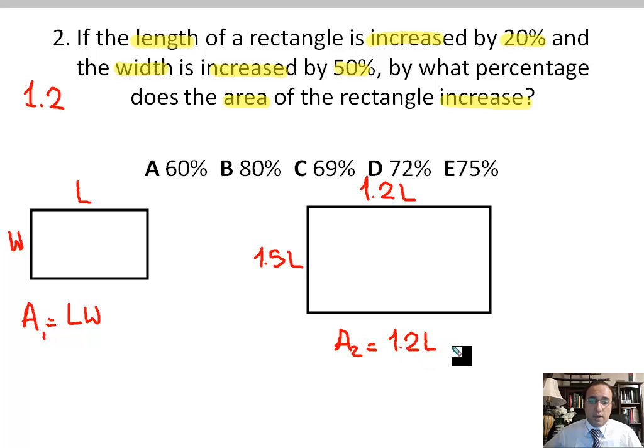which is 1.2L times 1.5W. Now, I need to rewrite this so that it looks better. Keep the L times W outside, and inside parentheses here, multiply 1.2 times 1.5. That's basically the same thing as what's on top of it right here. So 1.2L times 1.5W is the same as taking the 1.2 times the 1.5 first inside parentheses, and then multiplying all this by LW.